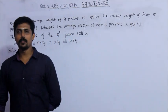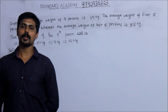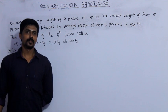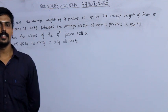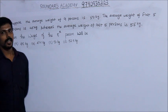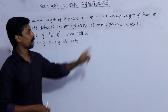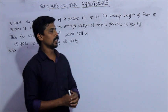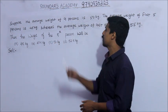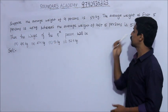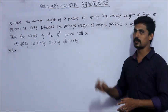Hi everyone! This is a UPSC 2017 examination question. Suppose the average weight of 9 persons is 50 kg. The average weight of the first 5 persons is 45 kg, whereas the average weight of the last 6 persons is 55 kg. Then what will be the weight of the 5th person?